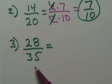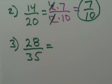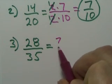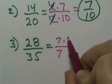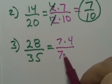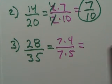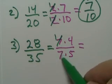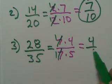Number three: 28 over 35. What number do they have in common? What's the largest number they have in common? The number seven. Seven will go into both of them — 28 is seven times four, and 35 is seven times five. So the sevens can cancel: seven goes in there once, seven goes in there once, and you're just left with four over five.